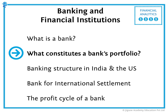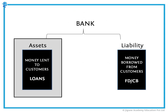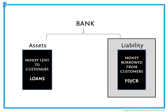What constitutes a bank's portfolio? Money lent to customers and all loans that are earning assets for the bank come under the assets category. Any money borrowed from the customers or money on which the bank has to pay interest come under the liability category. These include fixed deposits and current bank accounts.